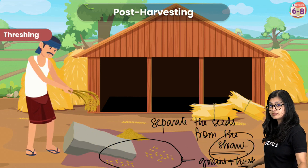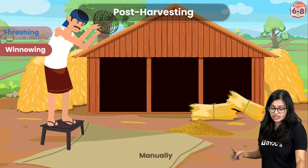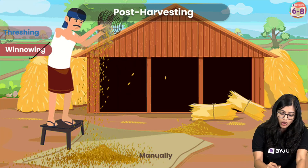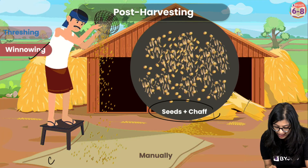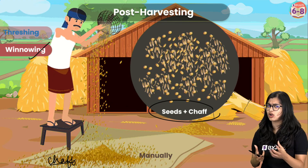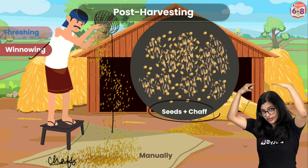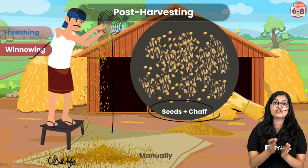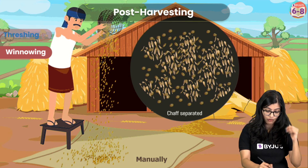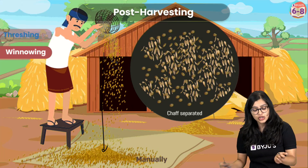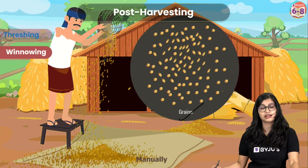We haven't got our final product yet because there's husk mixed in that we don't want — a lot of unwanted protective covering that needs to be separated out. We do this with the help of winnowing. Winnowing is the separation of seeds from chaff — the dry casing of seeds or grains, also referred to as husk. From a distance, we throw the mixture to the ground. Grains are more dense so they fall directly downwards, while chaff is light and gets separated out. Finally we get the grains we need.